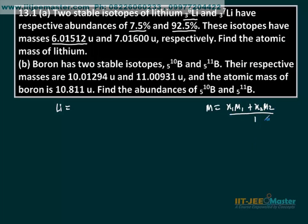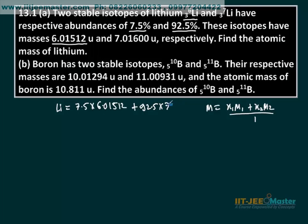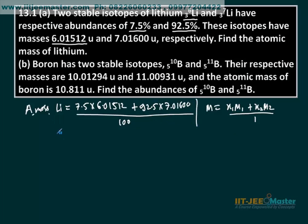Divide by 1, or divide by 100 if you take percentage. You can take either percentage or fraction. Taking percentage: (7.5 × 6.01512) + (92.5 × 7.01600), divided by 100. This gives the atomic mass of lithium. Simplifying, you get 6.9409, which we take as 6.941 atomic mass unit.